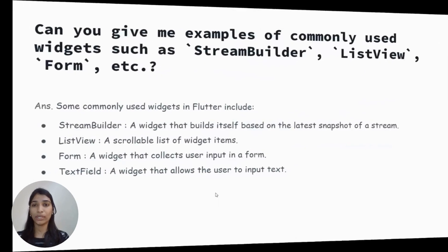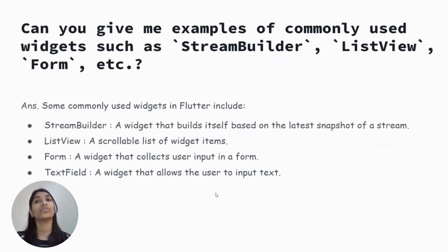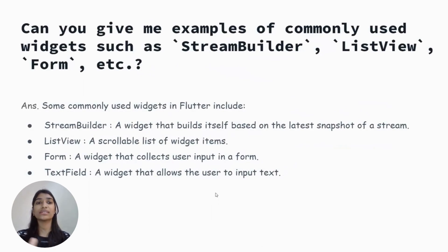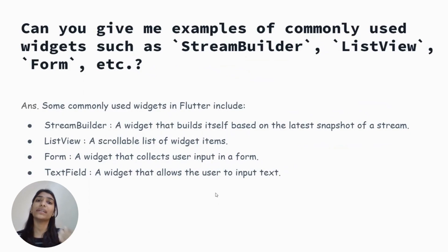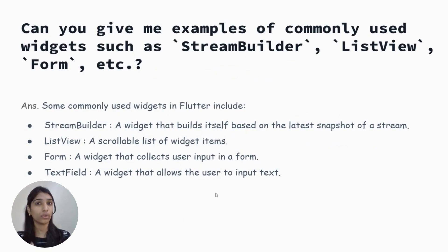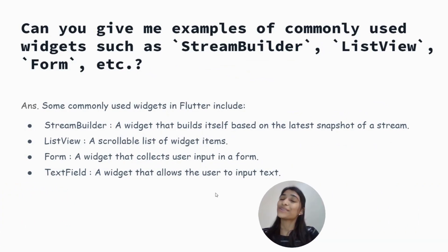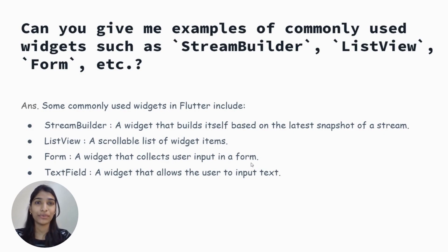The last common question is about widgets — interviewers ask basic widget questions to check your knowledge. For example, what is StreamBuilder, what is ListView, what is Text. Let's take StreamBuilder as an example: StreamBuilder is a widget that builds itself based on the latest snapshot of a stream. Whatever data we receive from the API or our local database, the StreamBuilder will display that data in the UI accordingly.